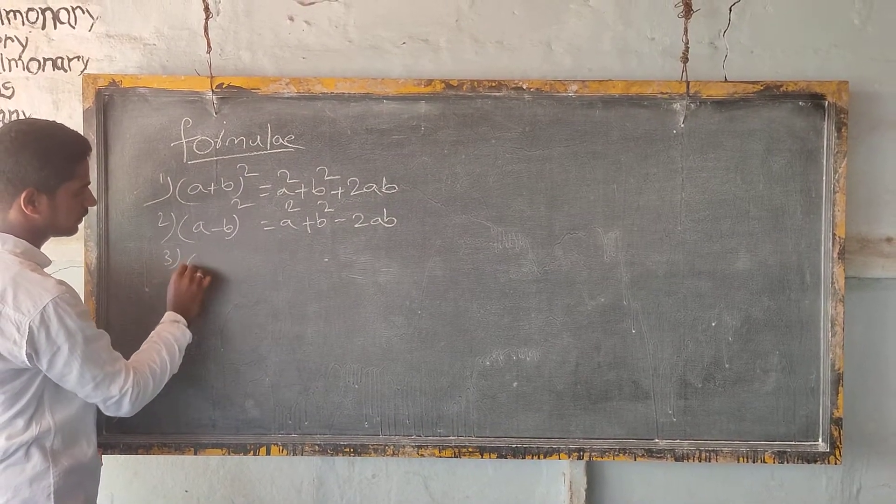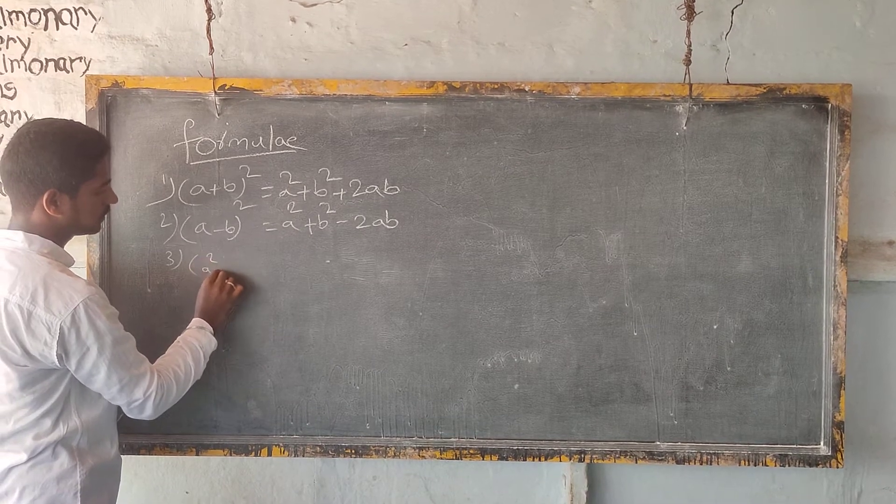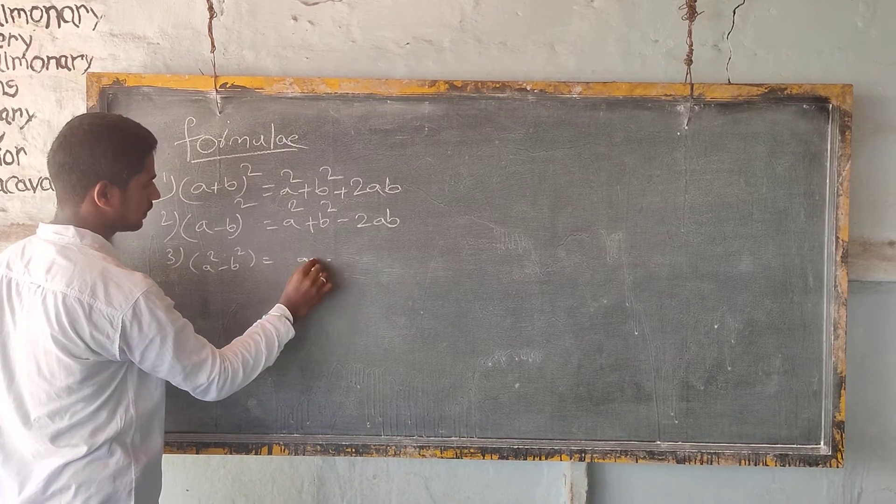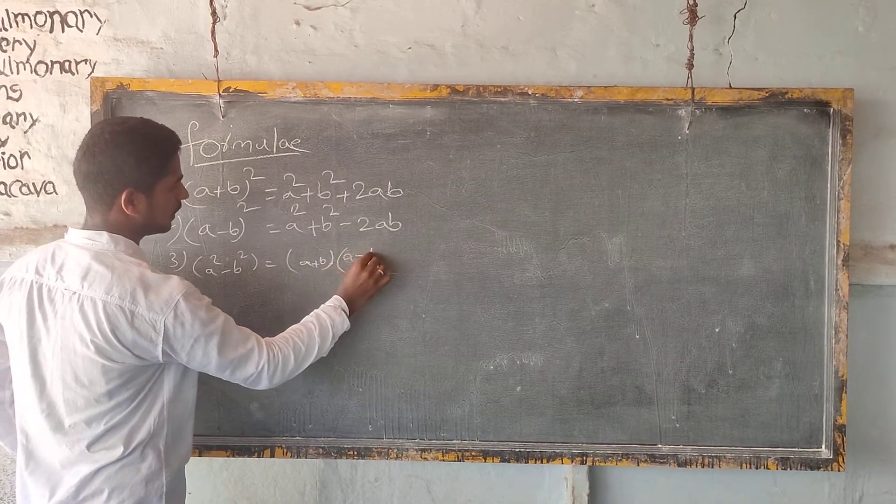Third one, A squared minus B squared is equal to A plus B into A minus B.